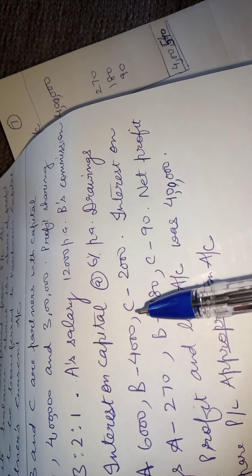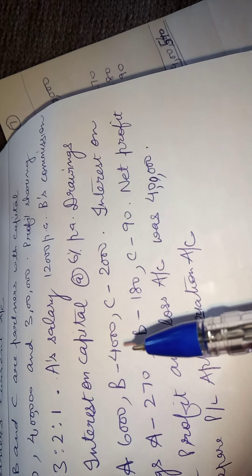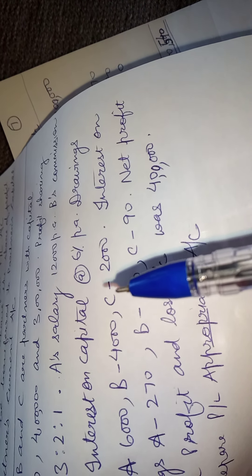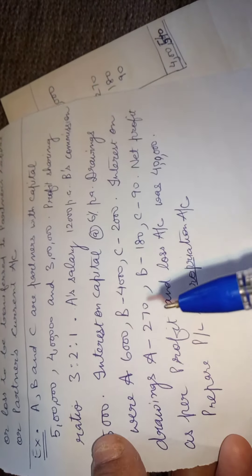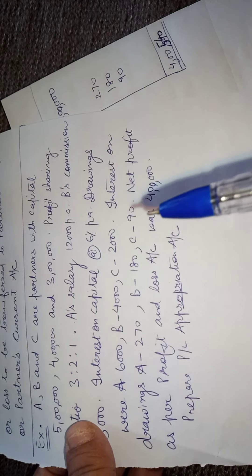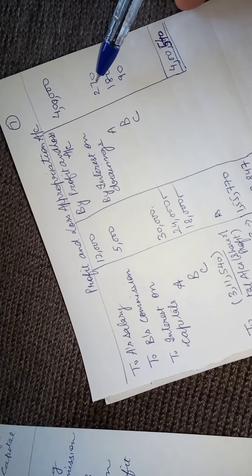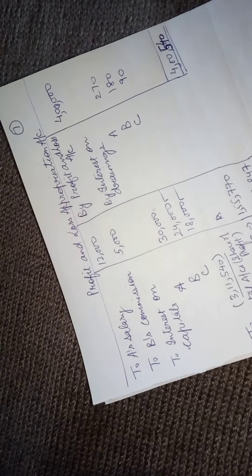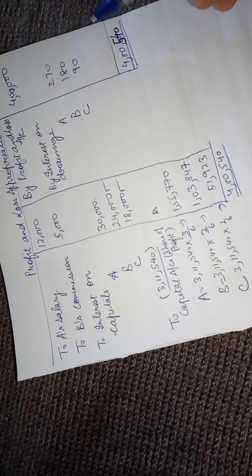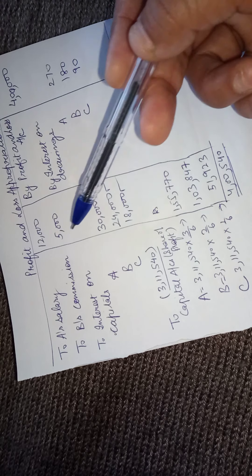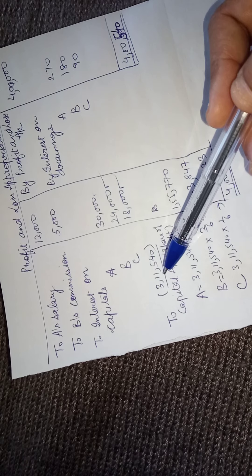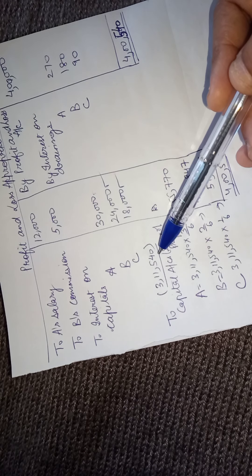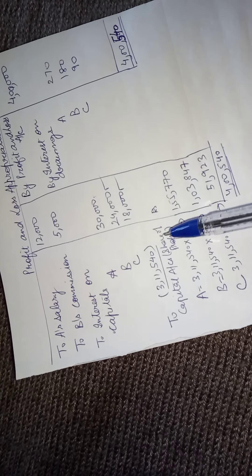Interest on drawings — 270, 180 and 90 for A, B and C respectively — is entered on the credit side. Now the balancing figure: after adding all credit items and deducting all debit items, the balancing figure — that is, the net distributable profit — comes out to be three lakh eleven thousand five hundred and forty.